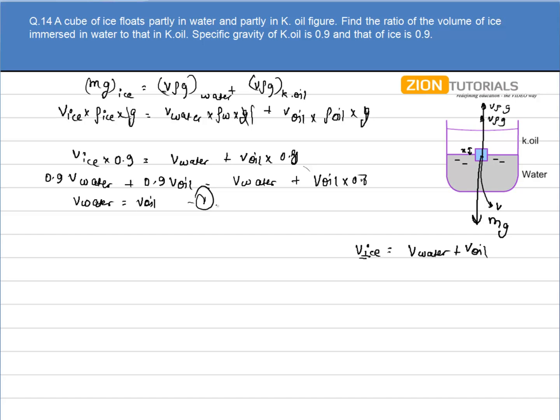The ratio of the volume that is submerged in water to that of kerosene oil is equal to 1. That is the answer.